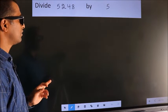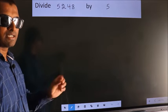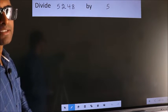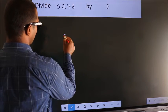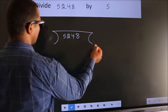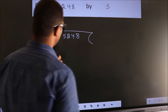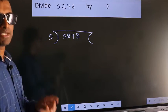Divide 5248 by 5. To do this division, we should frame it in this way: 5248 here, 5 here. This is step 1.